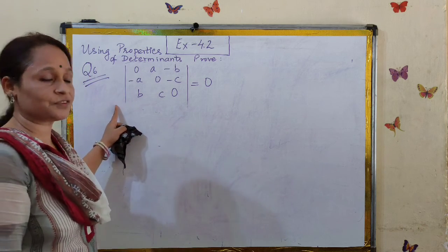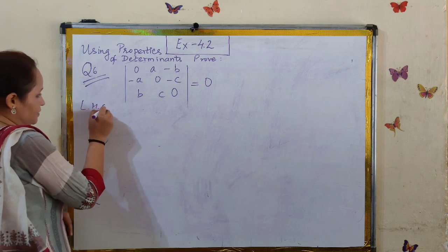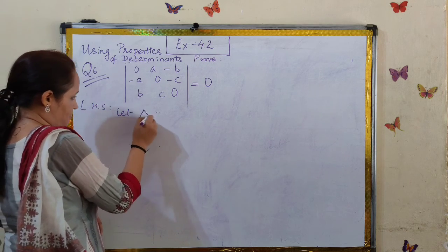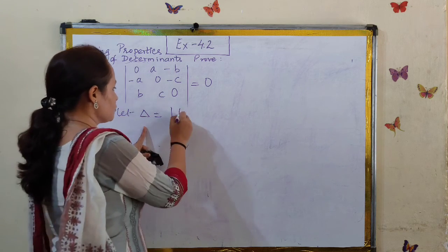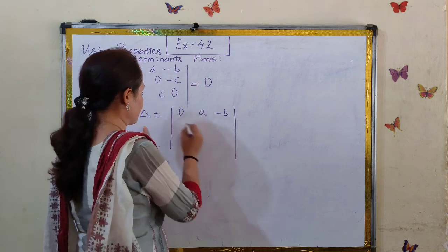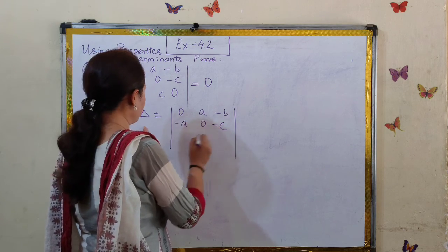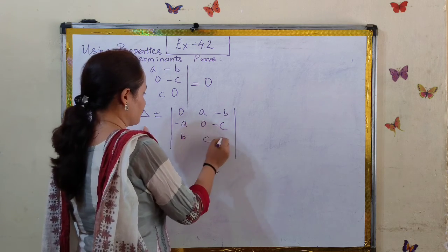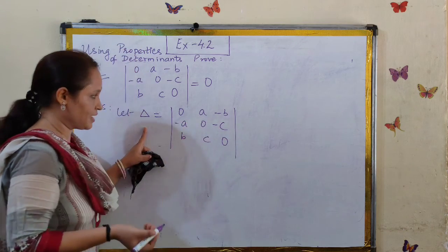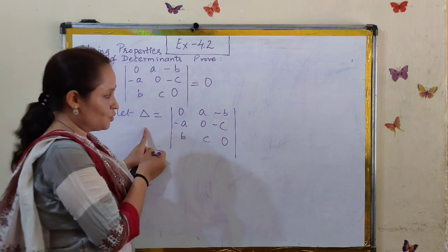We begin with the left hand side. Let's say the determinant is represented by delta. Let's note down the entries of this determinant. If you see the entries very carefully, the diagonal entries are 0.